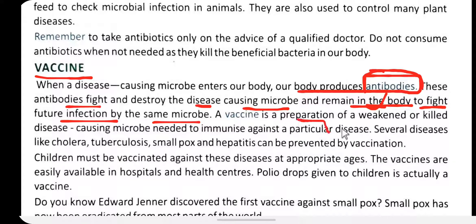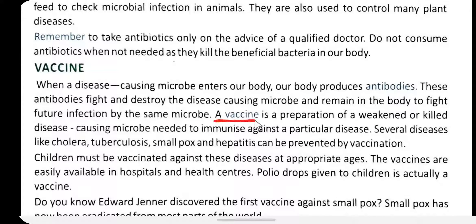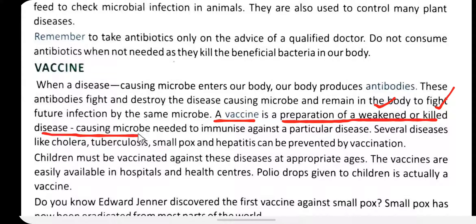A vaccine is a preparation of weakened or killed disease-causing microbes, used to immunize against a particular disease. So a vaccine consists of weakened or dead microorganisms, prepared to protect us from a specific disease.